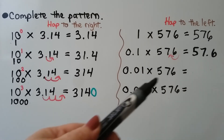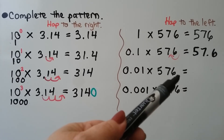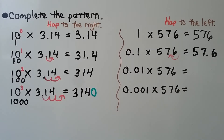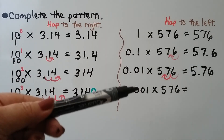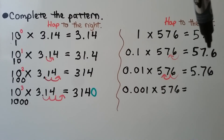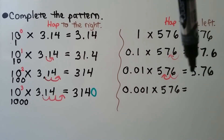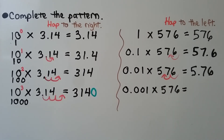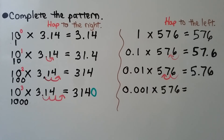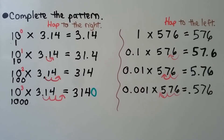Multiplying it by one-hundredth, it's still going to involve a five, a seven, and a six in the product, but now we're going to move the decimal point two hops to the left. It's a whole number, so it's right here on the right side of the six. Two hops — we'll put it in between the five and the seven. Can you see the pattern? The decimal point moved one hop for one-tenth, then two hops for one-hundredth. Do you know where the decimal point will be if we multiply it by one-thousandth? We've got three hops — it's going to move three hops to be on the left side of the five. It will equal five hundred seventy-six thousandths.